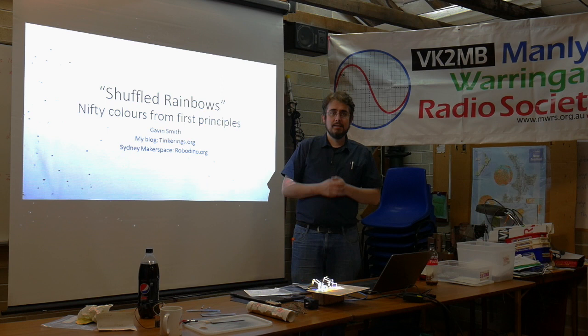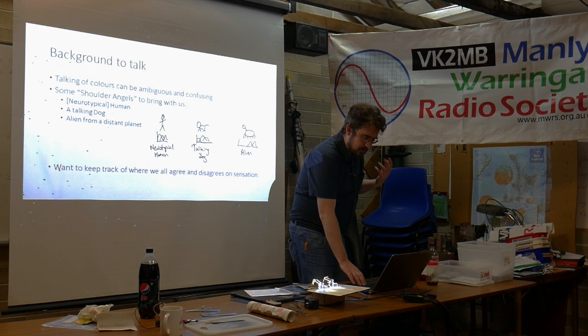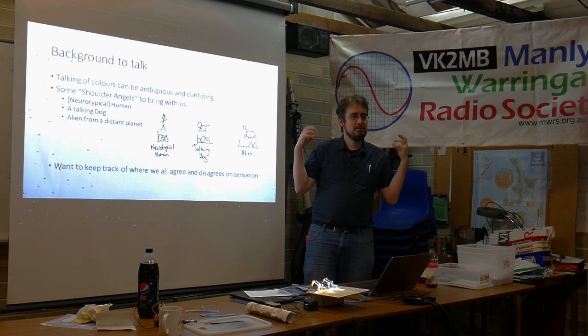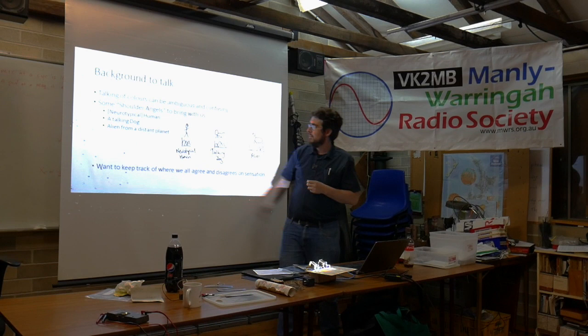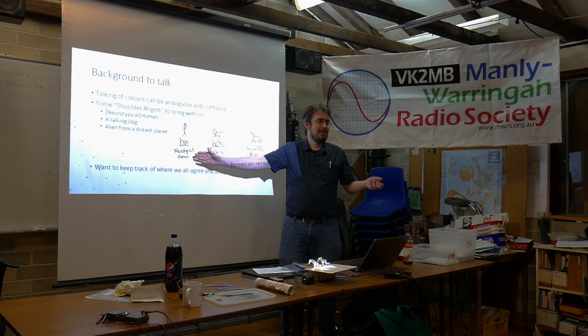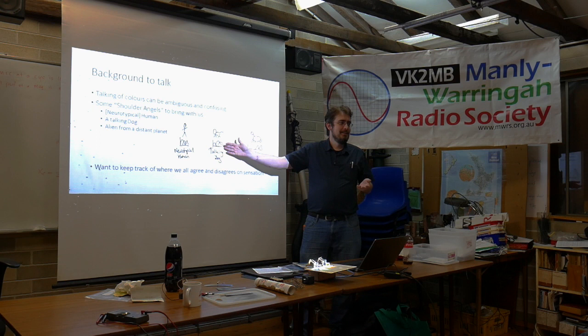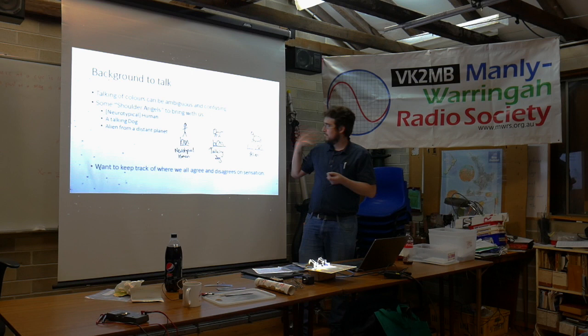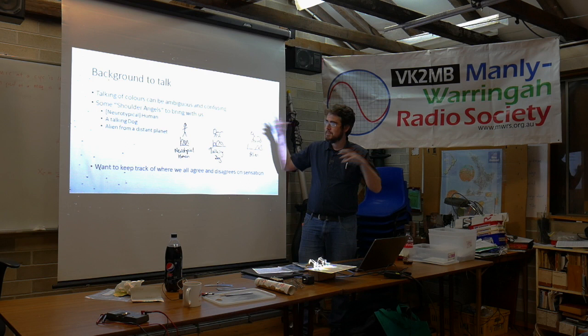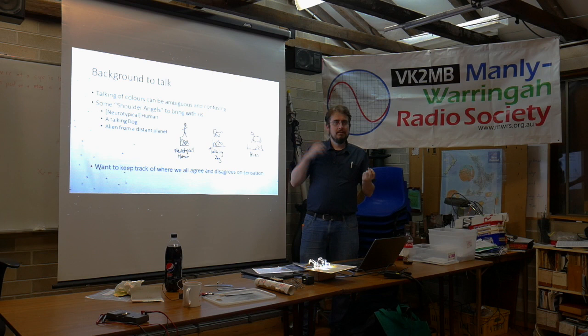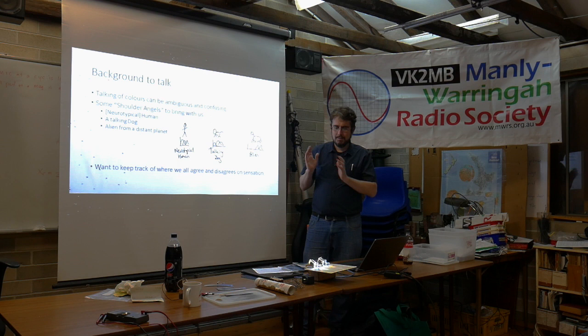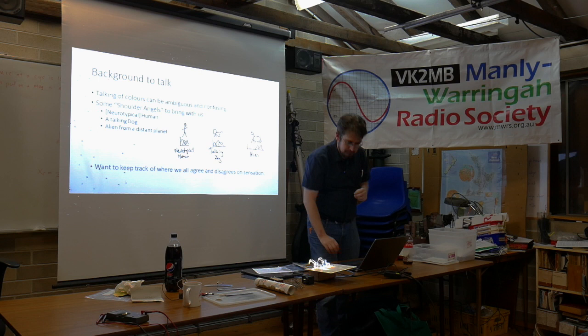I'm going to be talking a lot about light and colour, and that's really ambiguous and confusing terminology. So I'd like to introduce some shoulder angels. In old cartoons the shoulder angels told you to do the good or the bad thing. Our three shoulder angels are: a typical human with standard colour vision, a talking dog — another Earth creature with similar absorption functions to a human — and an alien conceived to be completely different. With those three, we can avoid saying something specific to only one creature's point of view, and keep the distinction between what's true in physics and what's true in individual creature perception.